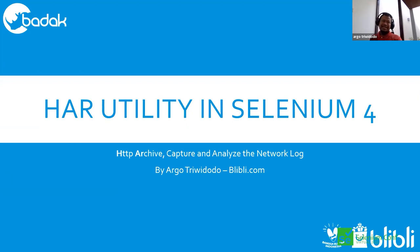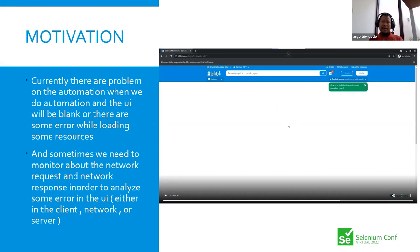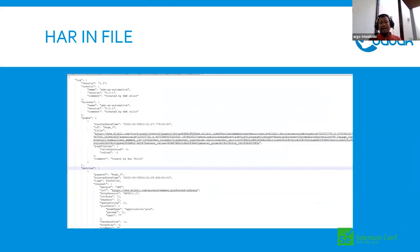Hi everyone, I'm Argo from bri.com. Today I'll share about the HAR utility in Selenium 4. The motivation: when doing automation, a blank page issue can happen and we don't know where it's coming from. Normally, running manually, you'd use the browser's inspect element, go to the Network tab, save the files, and analyze them later. Those saved files are called HAR files — a JSON-format file.